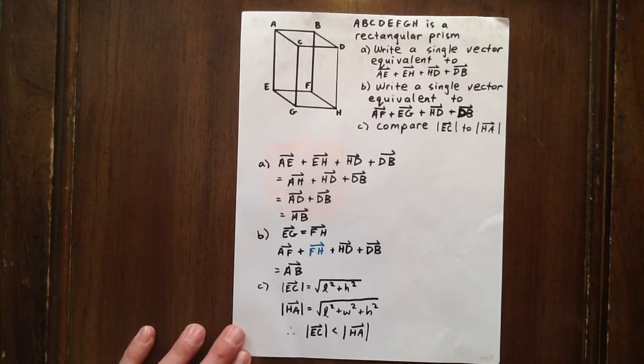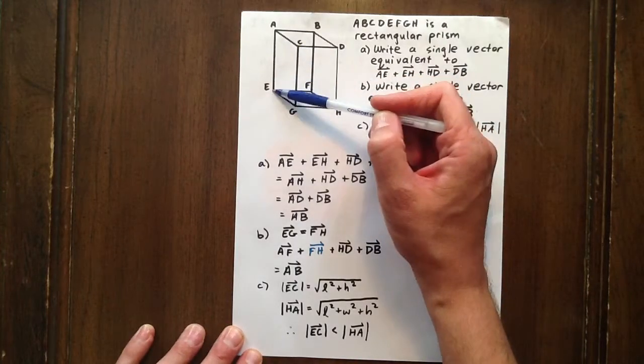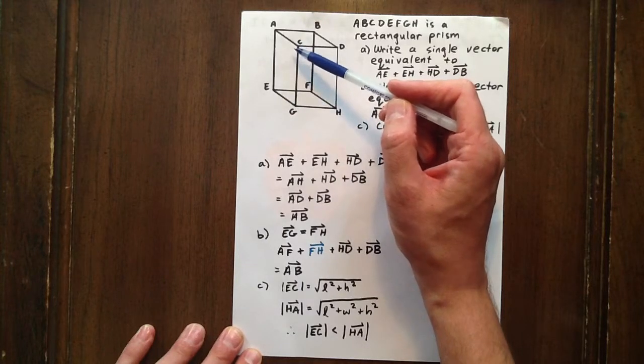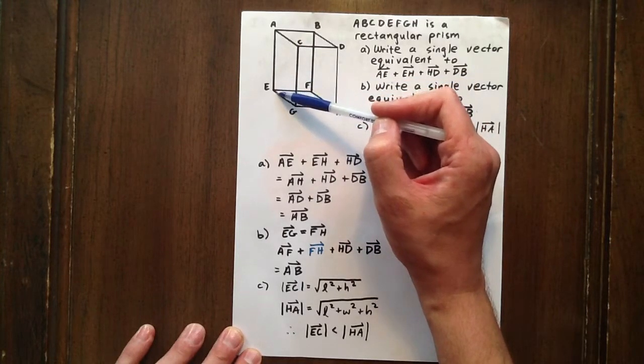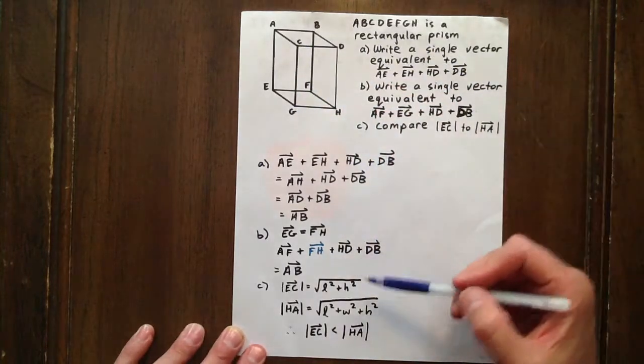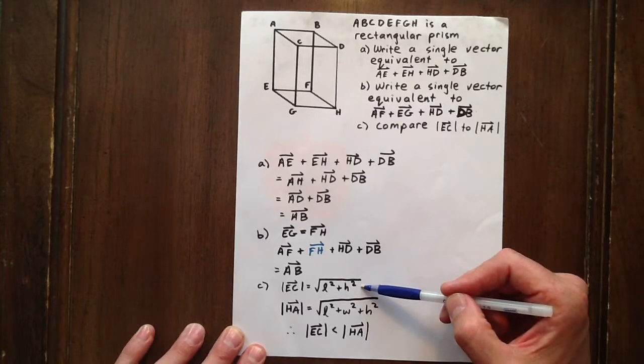And finally, the magnitude of EC. We're looking for the magnitude of that vector there. Well we see that we have a Pythagorean theorem opportunity where we have the length squared plus the height squared, square rooted. And so the magnitude of EC is the square root of L squared plus H squared.